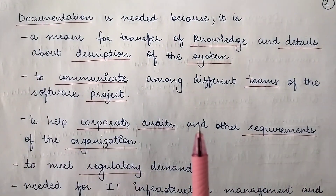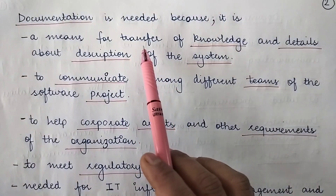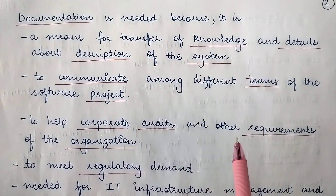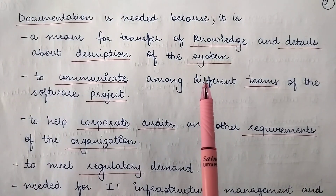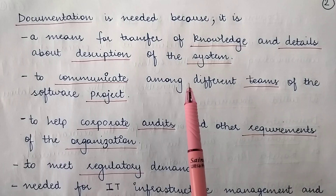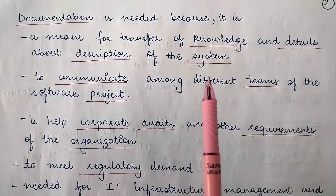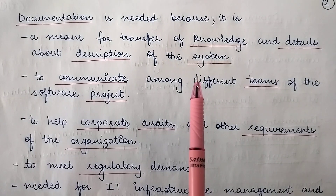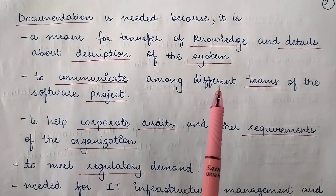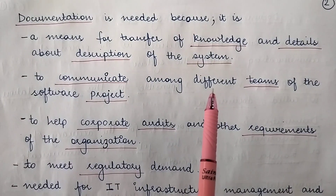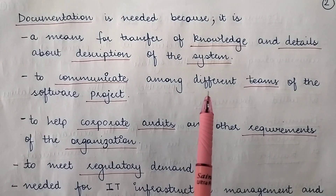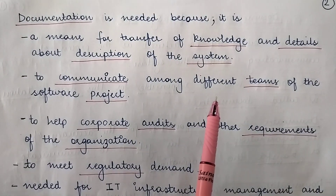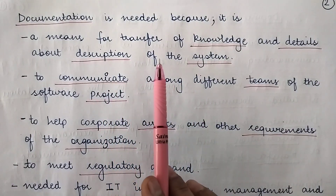Documentation is needed because it is a means for transfer of knowledge and details about the description of the system. It is a way to communicate whatever knowledge and details a person knows — the documenter writes it in a proper format so that in future, whoever wants to know about the system can refer to the documentation. This covers everything from problem identification and initial investigation to the final implementation phase.